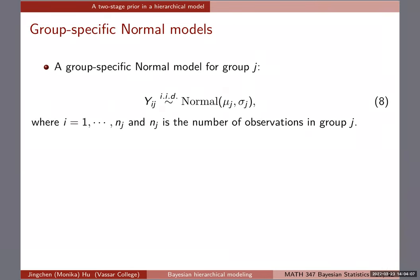Now let's come to the group-specific normal models. We'll go with equation 8, which is approach one, but we can strike something in between approach one and approach two. Equation 8 gives us the group-specific normal model for group j — we call it group-specific because we have a group-specific mean mu_j and a group-specific standard deviation sigma_j. Within the group, all observations are still i.i.d. We use the notation y_ij where j is the group index and i indexes observations from 1 to n_j.